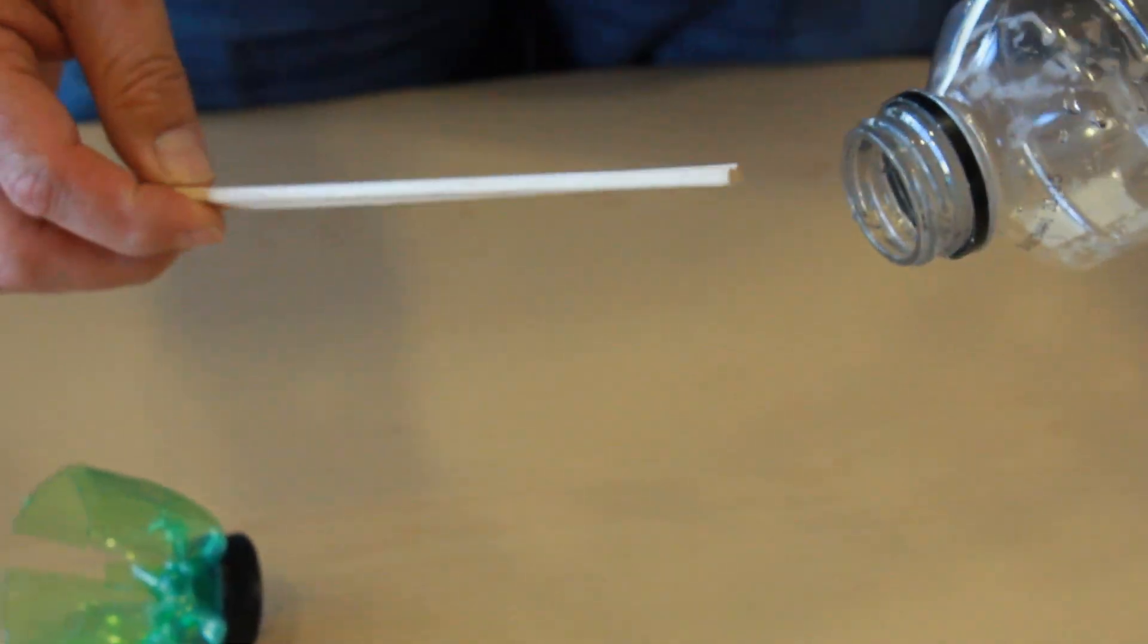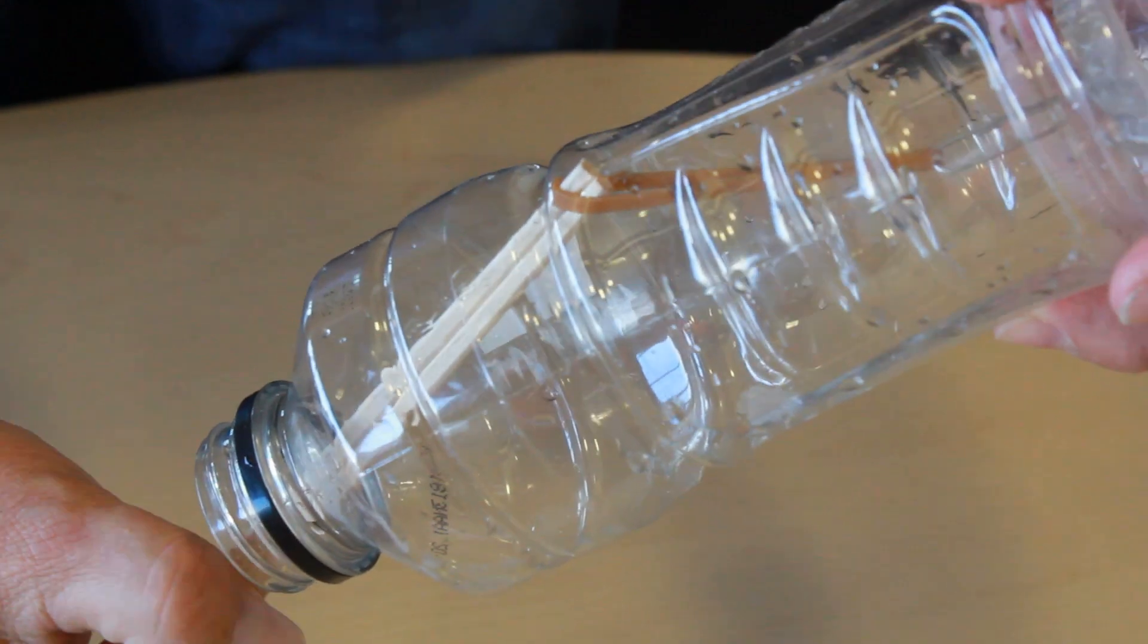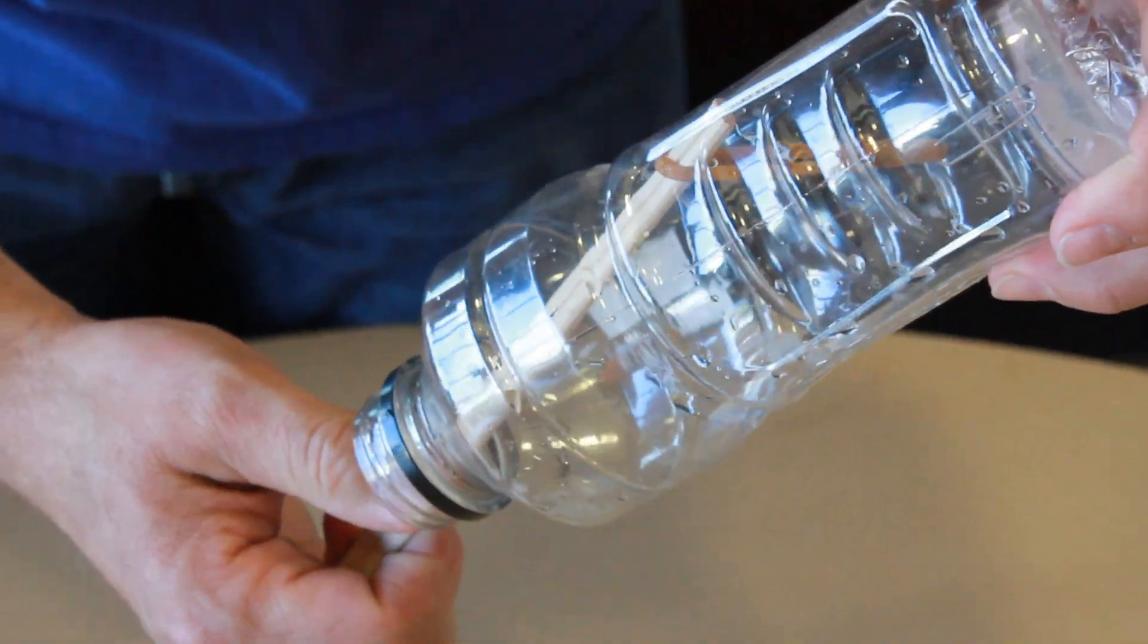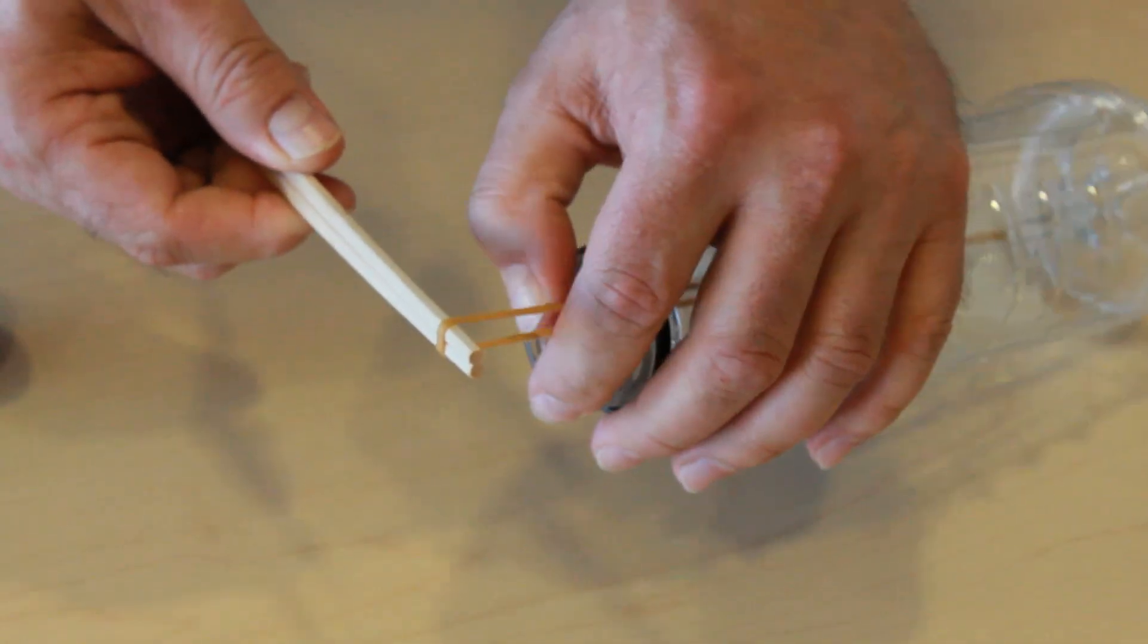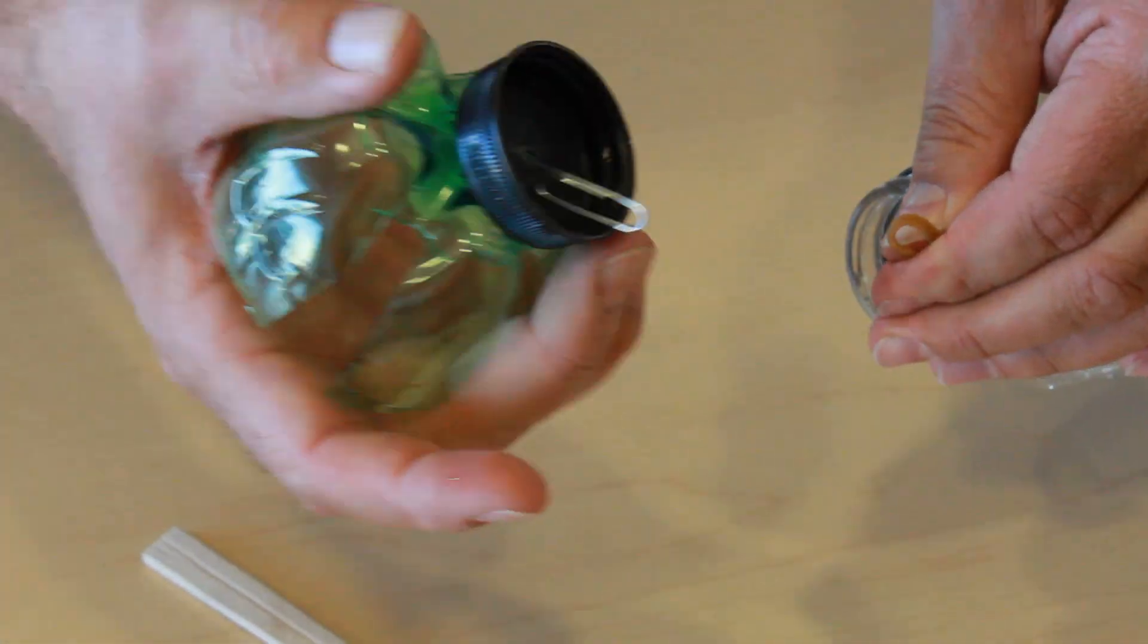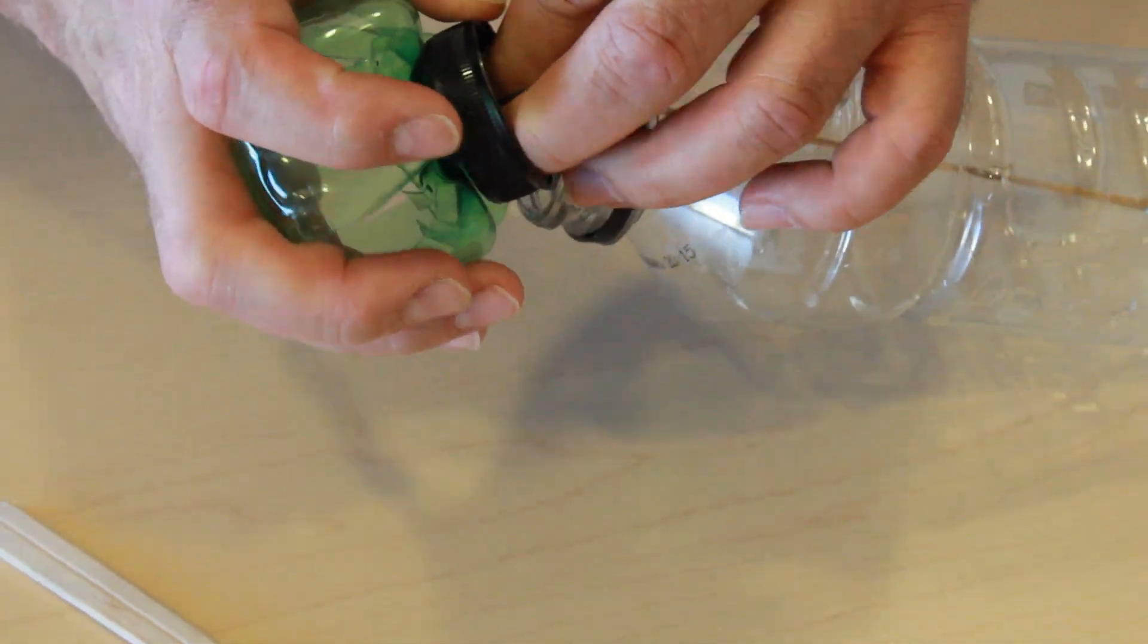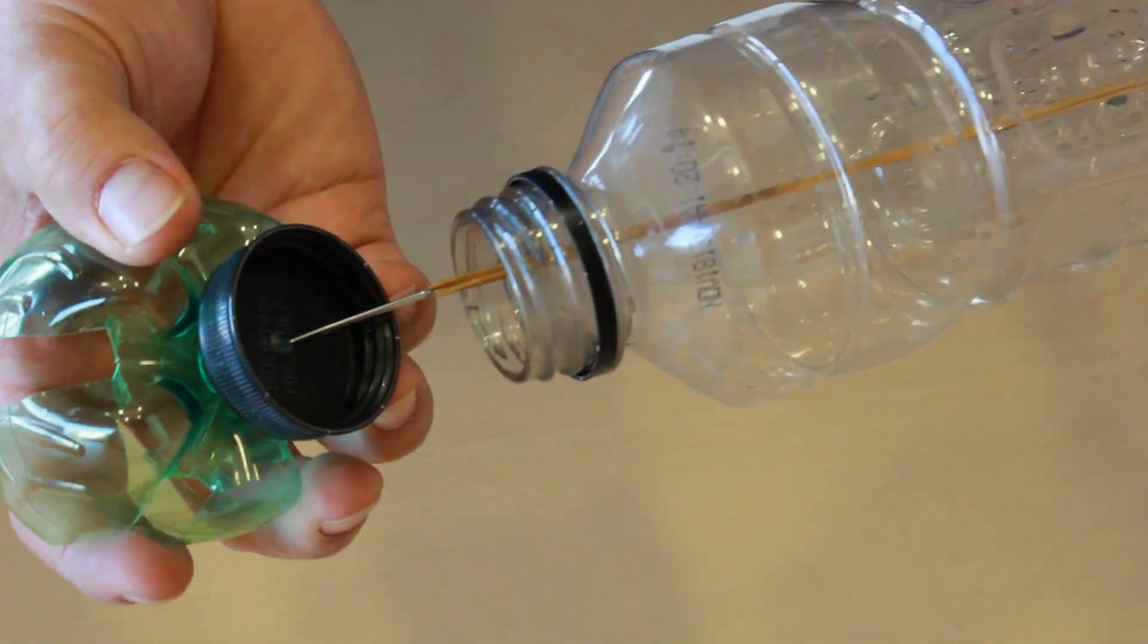Now we're going to take our chopsticks, and we're going to use them to fish out the rubber band. We're going to stretch it all the way out of the neck of the bottle. Once we've got it out of the neck, we're going to take it off of the chopsticks. We're going to get our propeller assembly, and we're going to hook it onto the paper clip.